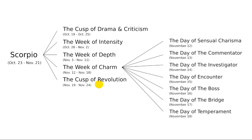To get an even better personality description, you can look at the specific day within the zodiac period. Here you can see the days taken from Gary's book, The Secret Language of Birthdays, that are part of the week of charm, sometimes also called the Scorpio 3 zodiac period. So from left to right you have the zodiac, the zodiac periods, and the days within the zodiac period. The personality description gets more accurate and detailed as you move from left to right.